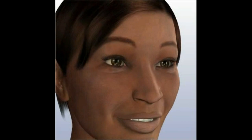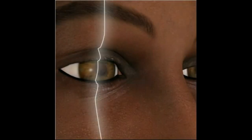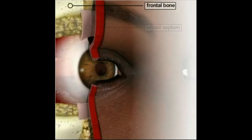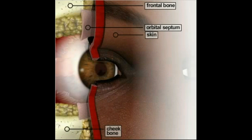Before you understand how eyelid surgery works, it is important to understand the underlying structure of the eyelids. Like the rest of the face, eyelids are composed of layers of skin, muscle, and fat.